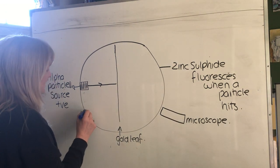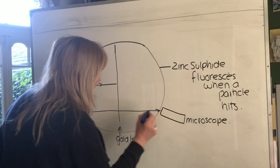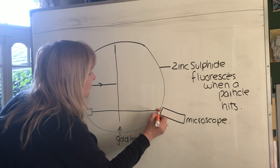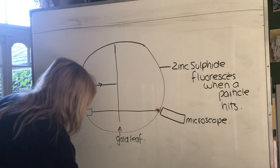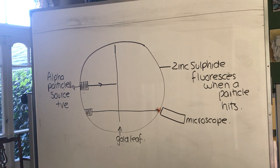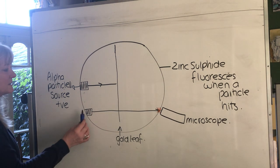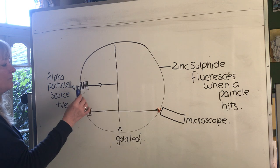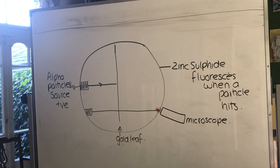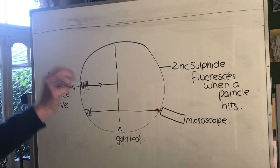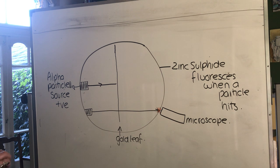They fired alpha particles - which are positive particles - at the gold leaf, and could see the flash of light when particles hit the screen. Their idea was that if the plum pudding model was correct, those positive particles should just come straight through those plum pudding atoms - like firing bullets through tissue paper. That's what they expected to happen.